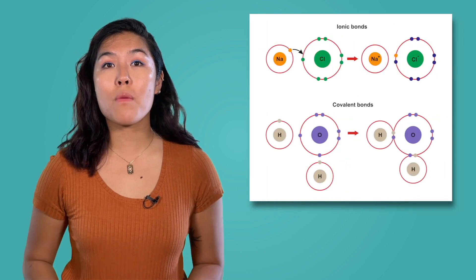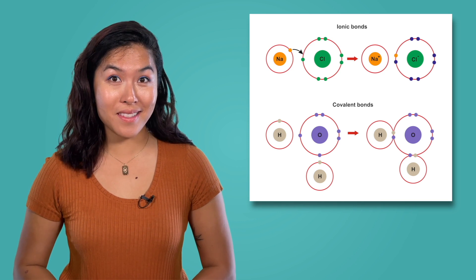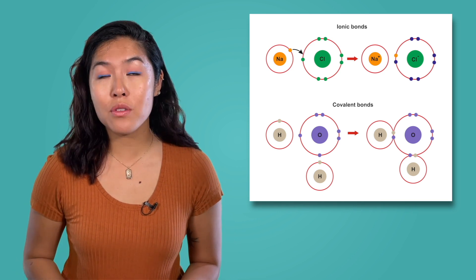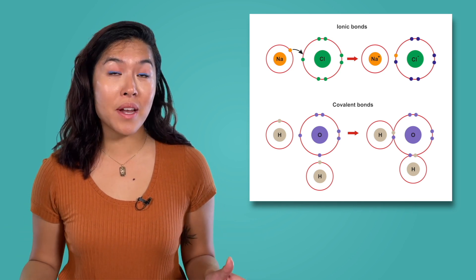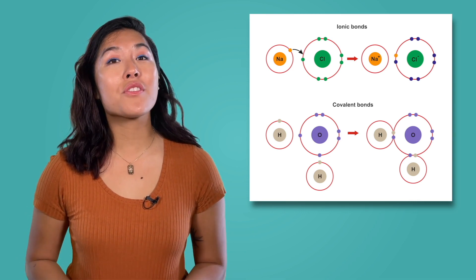Previously in this unit, we learned that when metals form bonds with non-metals, they transfer electrons and form ionic bonds. We also learned that non-metals share electrons with other non-metals to form covalent bonds, which are made of pairs of shared electrons.